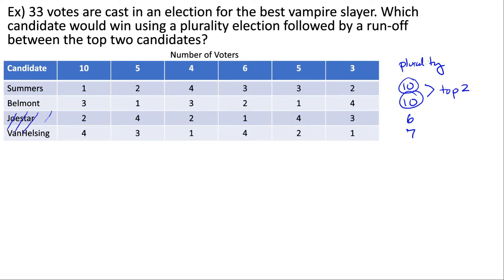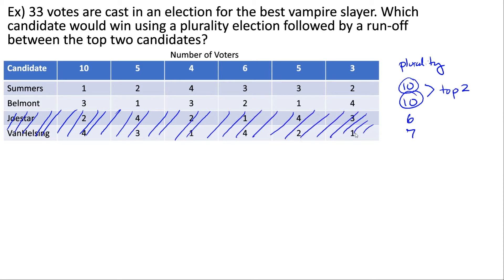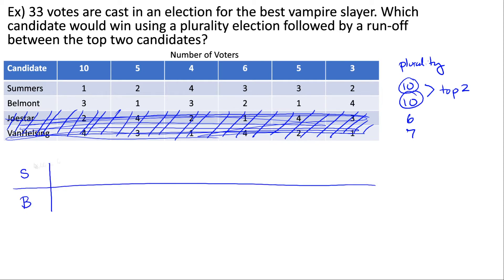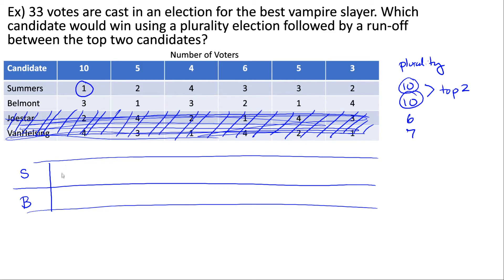We eliminate the other choices and put just the top two — Summers and Belmont — against each other. The first group of 10 voters still have their first choice in the election, so they vote for them. The next five voters still have their first choice, so they vote for them too. The next four voters have to choose between their third and fourth choice. They prefer their third choice, so their four votes go to Belmont, since rank 3 is higher than rank 4.